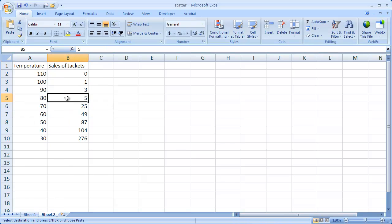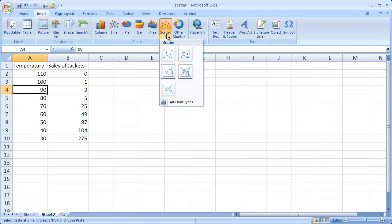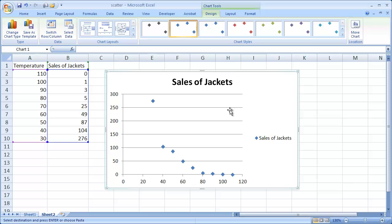And basically what we can do is since there's no breaks within the cells, I can just select any of the cells and go into Insert, Chart - excuse me, Insert, Charts, Scatter, and we're going to select the scatter with the markers. And basically this gives us our scatter chart.